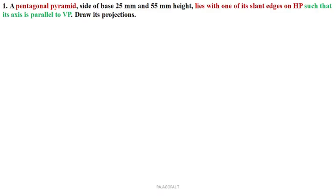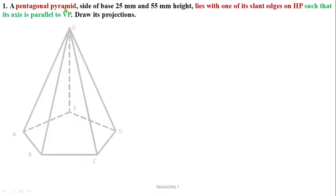Now read this question, which belongs to a pentagonal pyramid: side 25mm and 55mm height, lies with one of its slant edges on HP such that its axis is parallel to VP. This is a peculiar question where no axis inclinations are given; by the condition of slant edges on HP, we have to draw the final position of this pyramid.